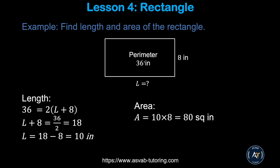In this example the perimeter is given as 36 inches and the width is given as 8 — you have to find the length. Since opposite sides are the same, use the formula: 36 equals 2 times (L + 8). Divide both sides by 2 to get 18, then subtract 8 to get L equals 10 inches. Then the area is 10 times 8 equals 80 square inches.